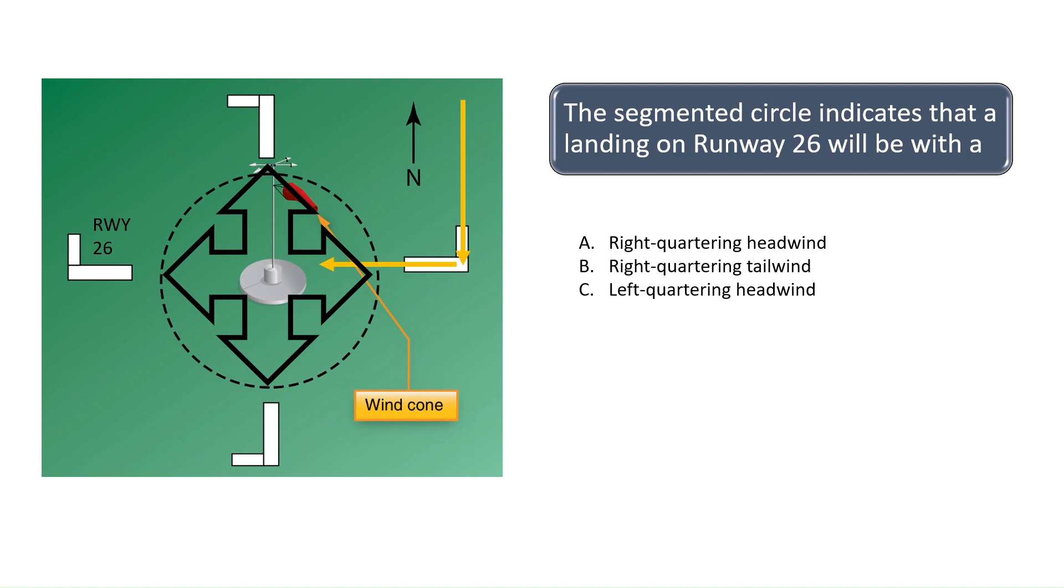The wind direction is indicated by the red arrow and windsock illustrated in the chart. As you can see, the wind would be coming from the right and the pilot would be flying into a headwind, so the correct answer is A, right quartering headwind.